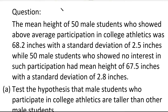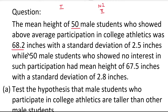The first category of students is those who participate in college athletics — that is the first population. The second category is male students not interested in athletics — that is the second population. Population 1: 50 male students, mean height x1-bar = 68.2 inches, standard deviation s1 = 2.5 inches. Population 2: 50 male students, mean height x2-bar = 67.5 inches, standard deviation s2 = 2.8 inches.